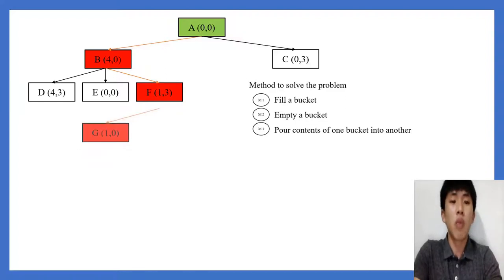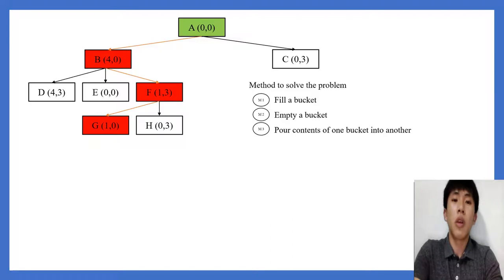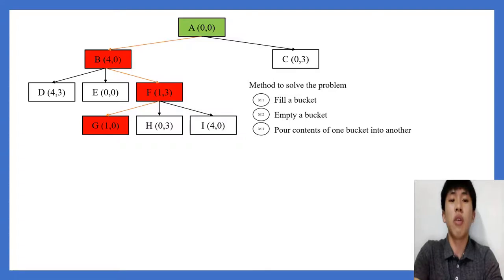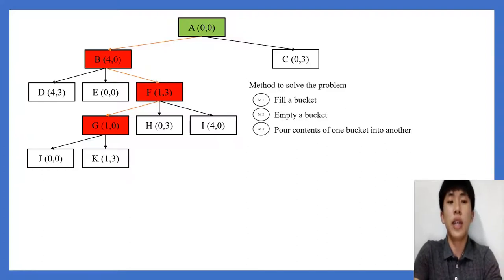Next we focus on (1,3). Using Method 2 to empty y gives (1,0), and using the same method to empty x gives (0,3). Using Method 3 again gives (4,0) again. Focusing on (1,0): using Method 2 to empty x gives (0,0); using Method 1 to fill y=3 gives (1,3); and using Method 3 to pour from x to y gives (0,1).